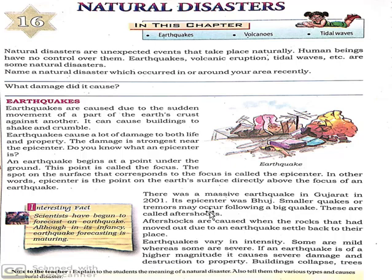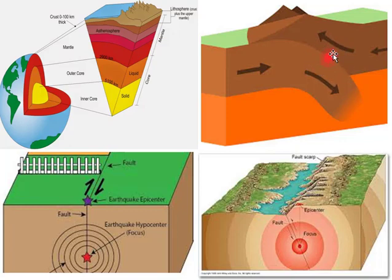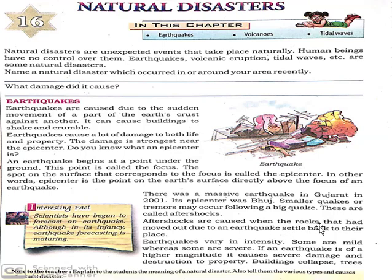When an earthquake takes place, after it ends, another earthquake may occur. This is called an aftershock. When the two tectonic plates overlap with each other it produces an earthquake. After producing an earthquake, they settle back to their original position. This is called resettlement of tectonic plates. During the resettlement of these plates, another earthquake may happen. Aftershocks are caused when the rocks that had moved out due to an earthquake settle back to their place.